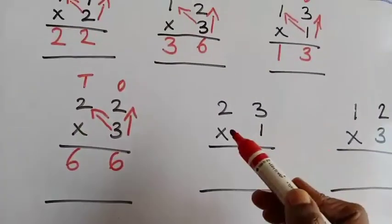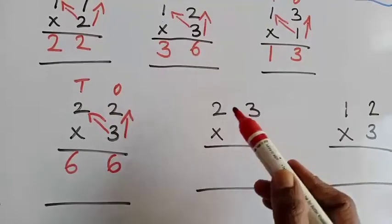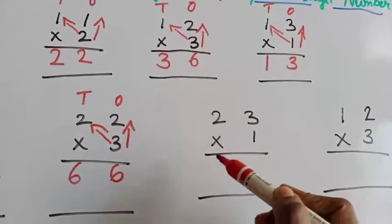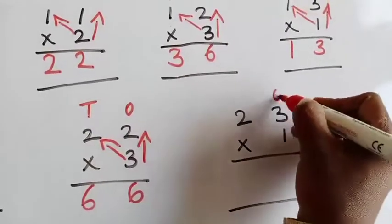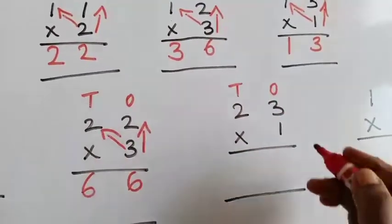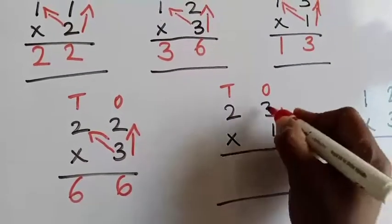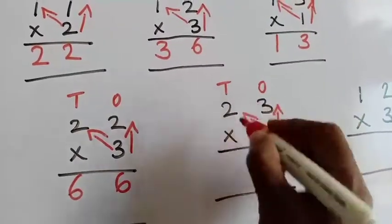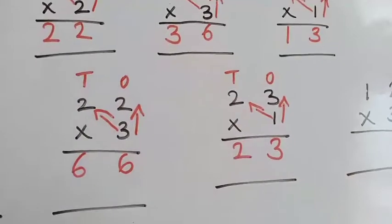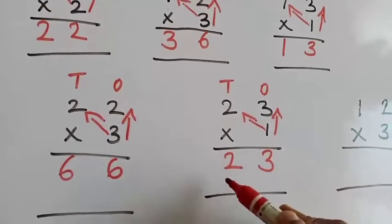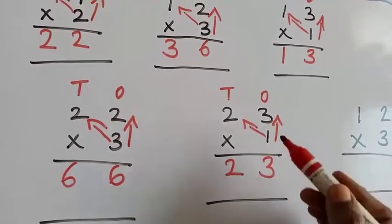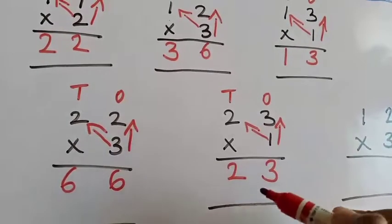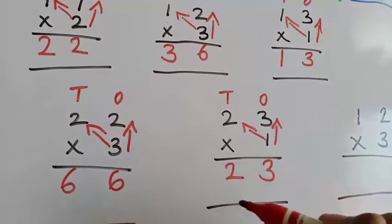The next example — sorry — is 23 into 1. Write the 1's place and 10's place. Then, 1 three's are 3. Again, 1 two's are 2. The total answer is 23.